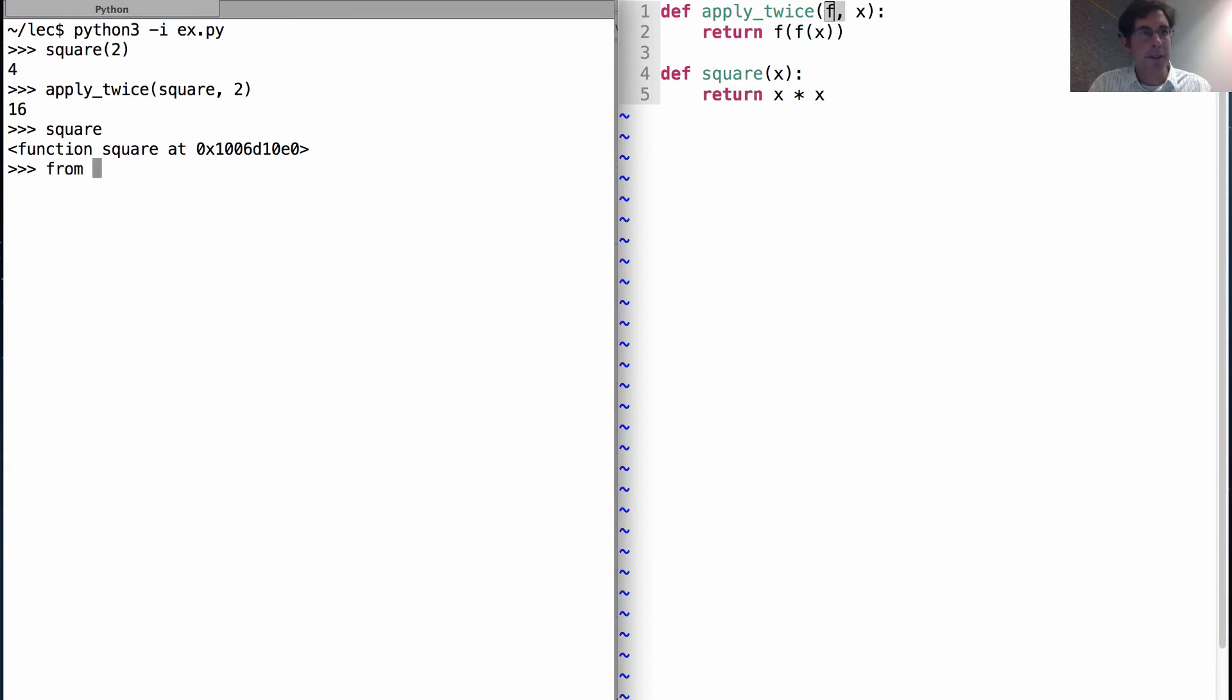Apply_twice also works with built-in functions. From math import square root. Apply_twice square root of 16. So the square root of 16 is 4. The square root of 4 is 2. So square rooting twice starting with 16 gives us 2.